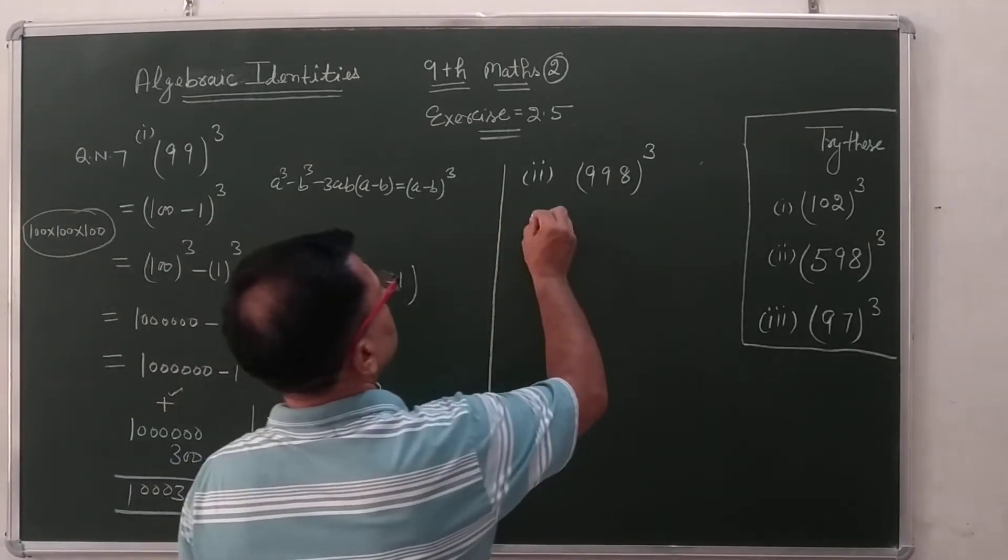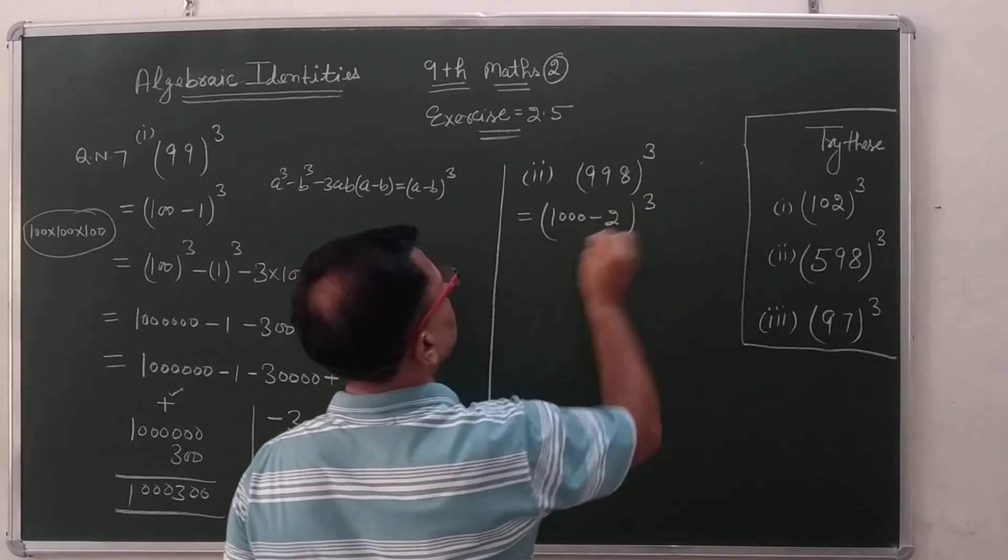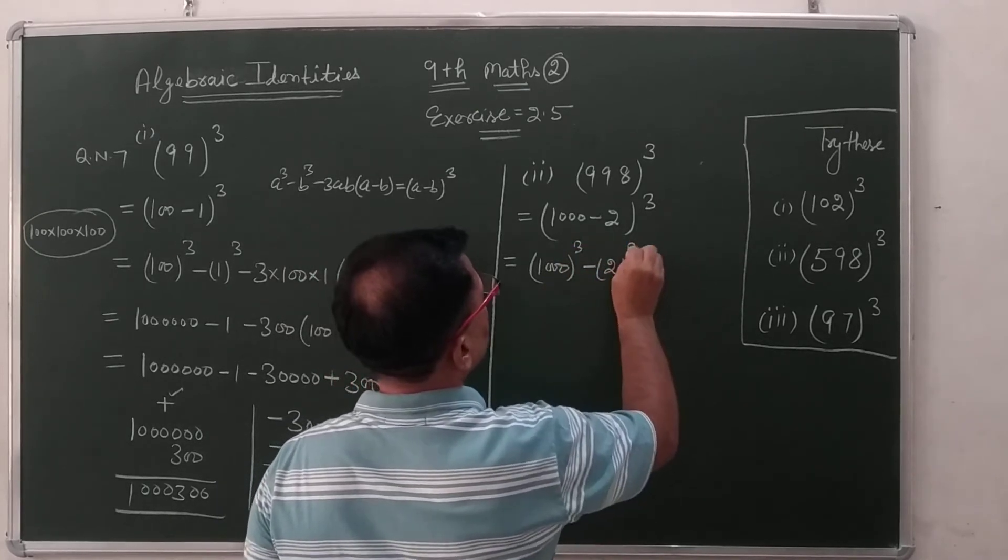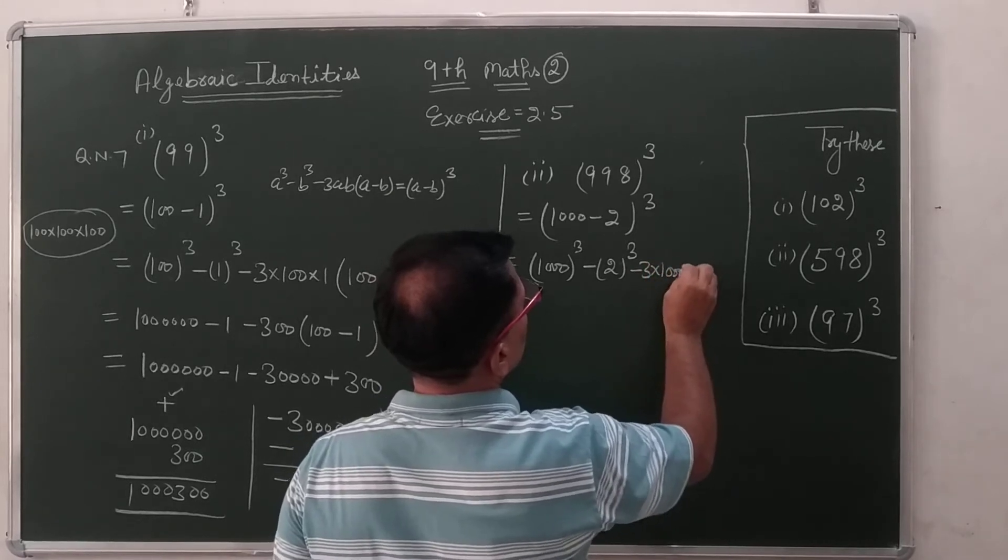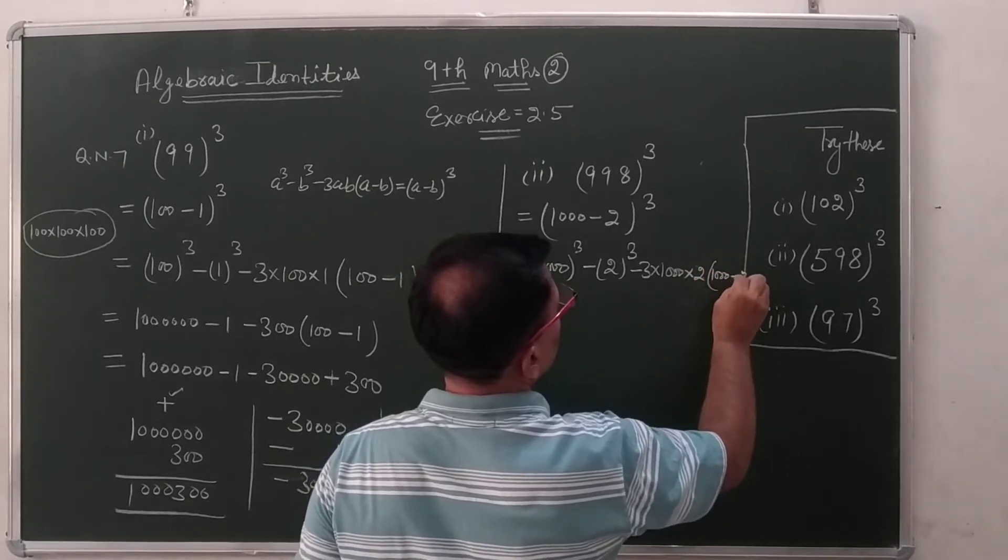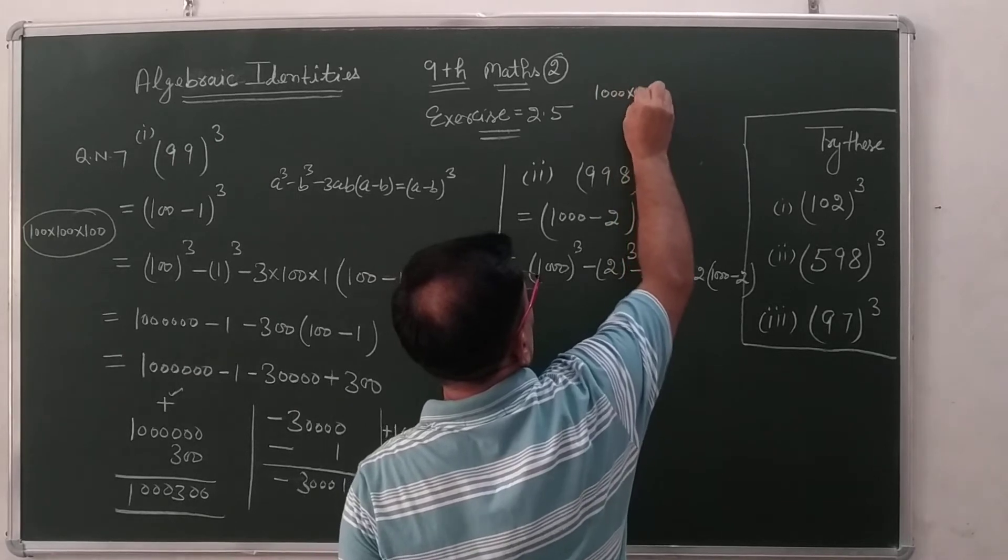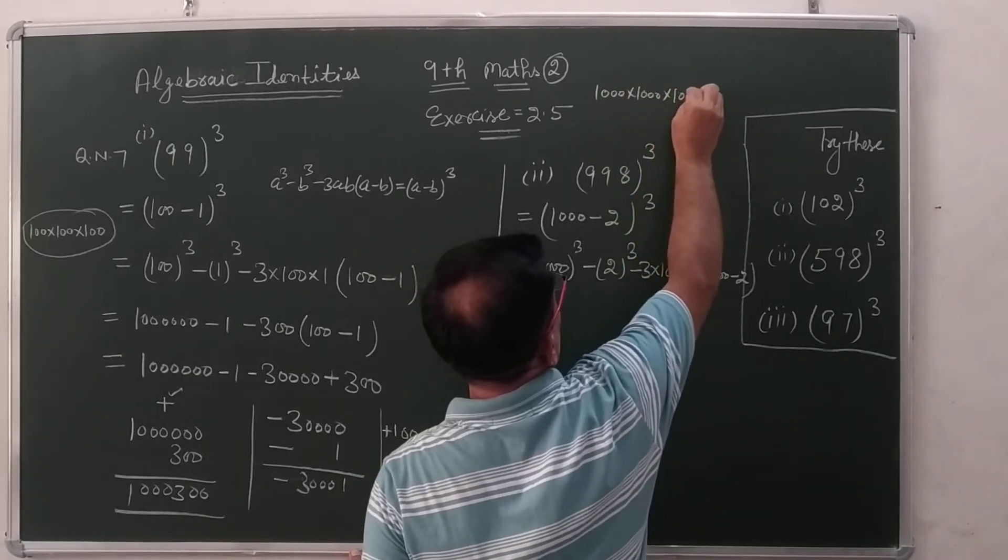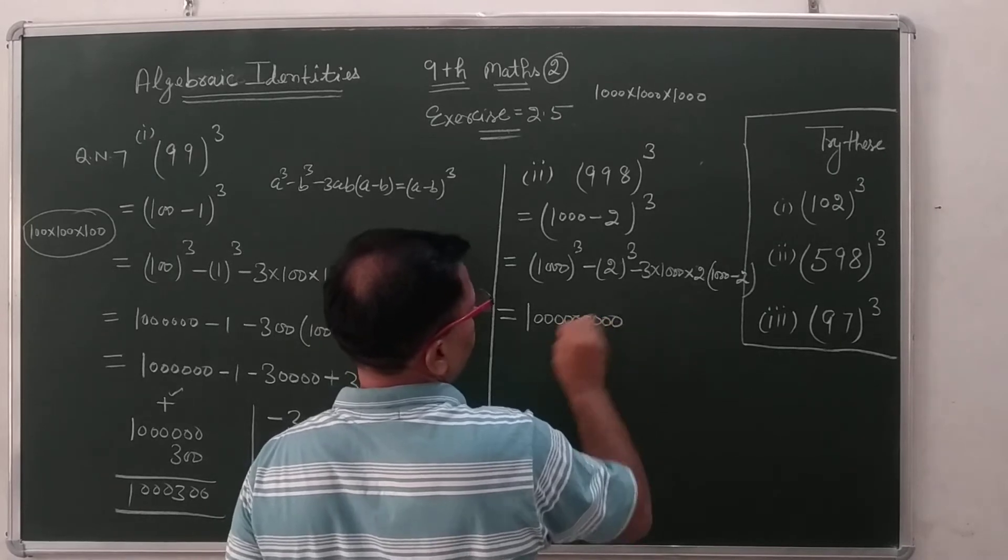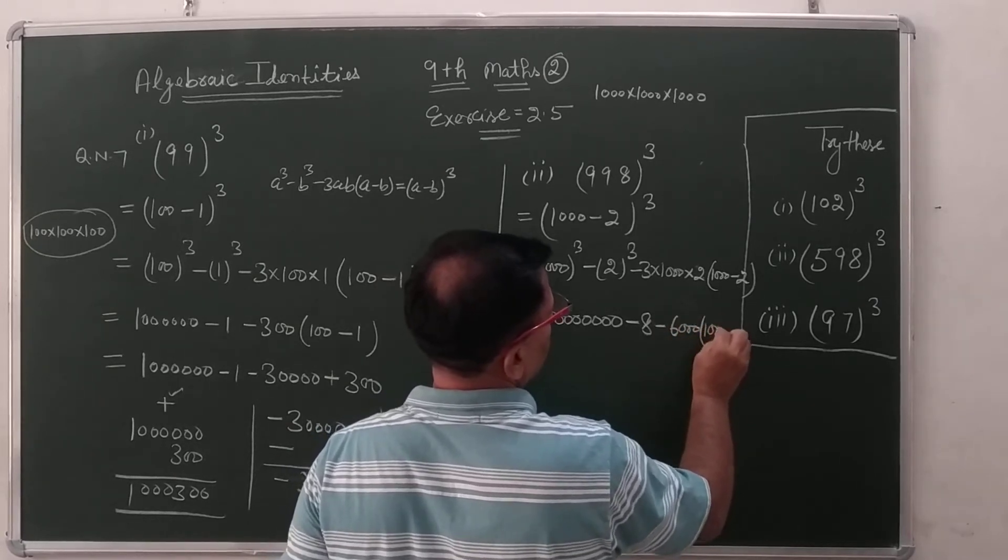Next, this can be written as 1000 minus 2 the whole cube. You write here 1000 cube minus 2 cube minus 3 into 1000 into 2 into 1000 minus 2. You know very well 1000 into 1000 into 1000. 1, 2, 3, 4, 5, 6, 7, 8, 9 minus 8 minus 6000 into 1000 minus 2.